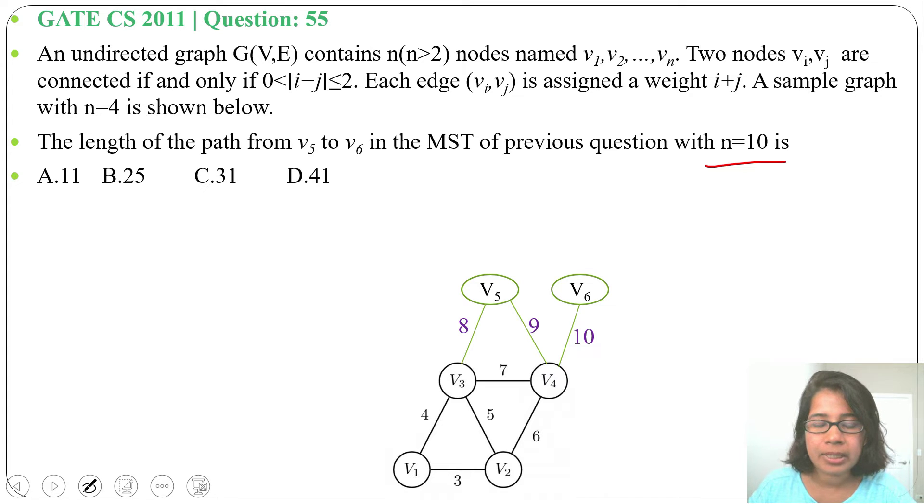Next, v5 and v6 will be connected, difference is 1, and weight will be 11. Now I'll create the spanning tree. So we'll consider v1 to v2, weight 3, then v1 to v3, weight 4. We'll skip weight 5.